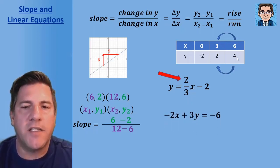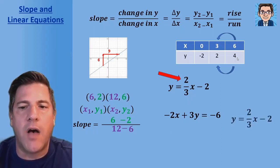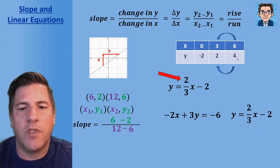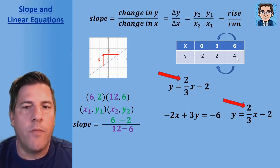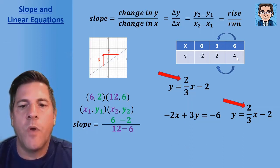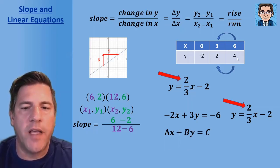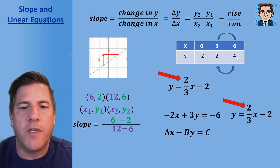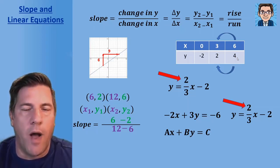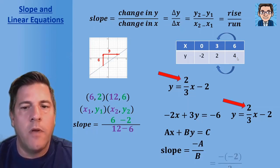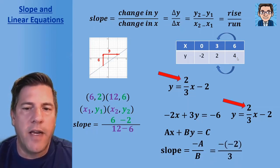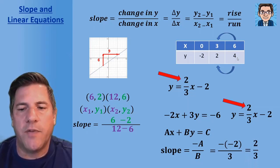If the equation is not solved for y, we have two choices. We can solve for y by adding 2x to both sides and dividing by three. Or we can use standard form ax plus by equals c, where a is the coefficient of x and b is the coefficient of y. In standard form, the slope is negative a over b. So in this equation, it's negative negative two over three, and negative times negative two gives positive two over three.